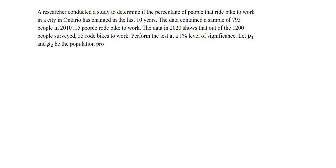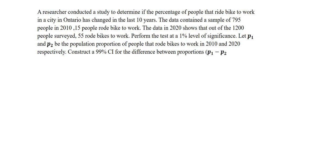Perform the test at a 1% level of significance. Let P1 and P2 be the population proportion of people that rode bikes to work in 2010 and 2020 respectively.